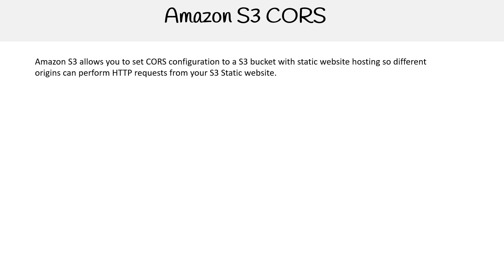Within Amazon S3, you can set a CORS configuration for your bucket. This is specifically for static website hosting — so when you're trying to access resources from another domain, like JavaScript assets, you'll be able to actually download them and execute them on the client side of your browser.